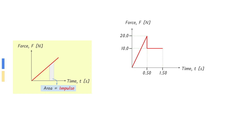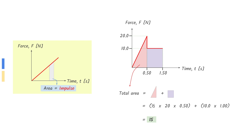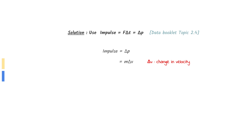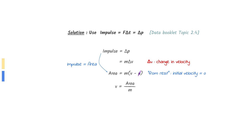The area underneath a force-time graph is the impulse. Calculate the area of the graph given in the question and make sure to take note of the units. Impulse equals the change in momentum. Change in momentum equals mass times change in velocity. The impulse here is the area underneath the graph. Take out u since the initial velocity is zero and make v the subject. Put in the values of the area and mass to find your answer.